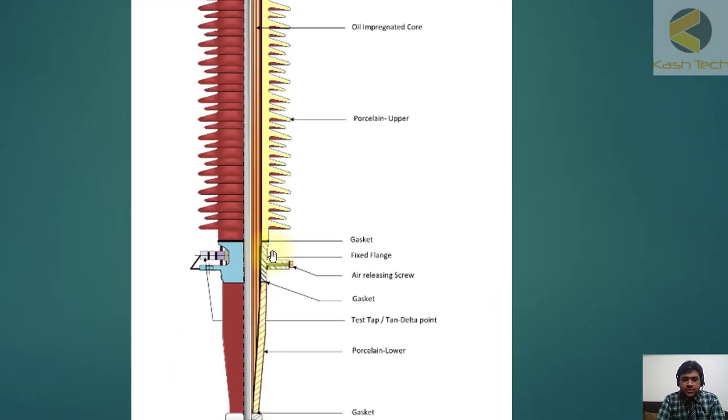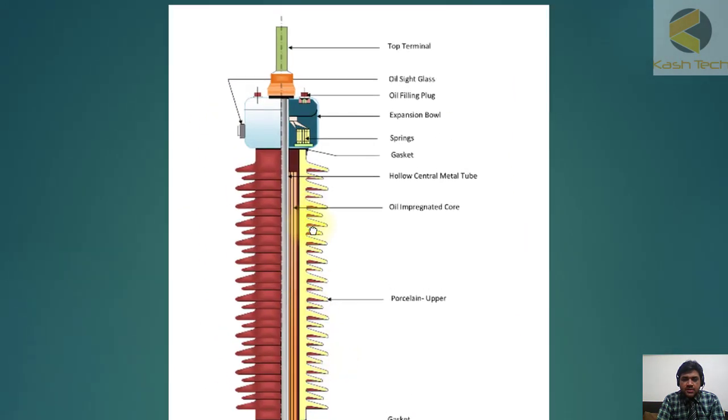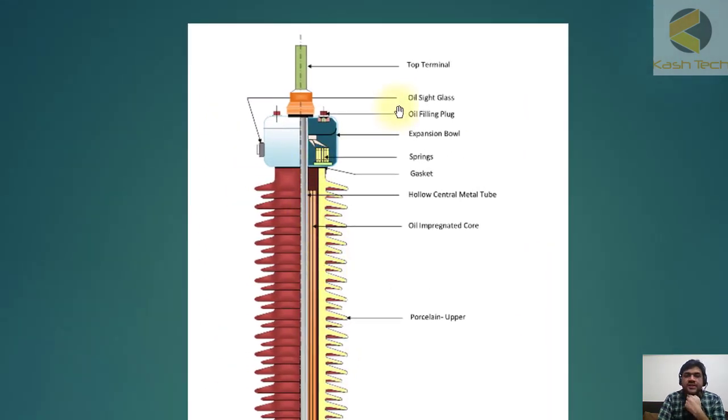Here you can see the detail of the bushing. This is the top terminal. This is the oil side glass where you can see the oil level up to this point. Oil filling plug - using this plug you are filling the oil in the bushing. Expansion bowl - this bowl itself which is called expansion bowl.